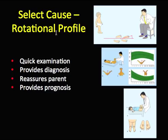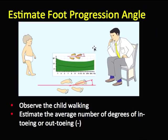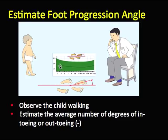We establish the rotational profile, which tells us where the problem is and how severe it is. We start by watching the child walk, then do hip rotation and the thigh foot angle. The foot progression angle is the angle between the axis of the foot and the line of progression — estimated by observing the child walking and focusing on one foot at a time, estimating degrees of internal or external rotation, then comparing with normal values.